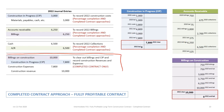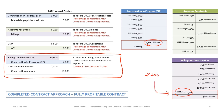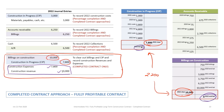Now that the contract is finished, we have a final entry that differs from the percentage of completion approach. With ending balances of $7.8 million in construction in progress and $10 million in billings, the difference of $2,200,000 is the profit on the contract. We must wipe out these accounts: debit billings for $10 million, credit construction in progress for $7.8 million, and record construction revenues of $10 million and construction expenses of $7.8 million. This flushes out both accounts, leaving balances of zero.